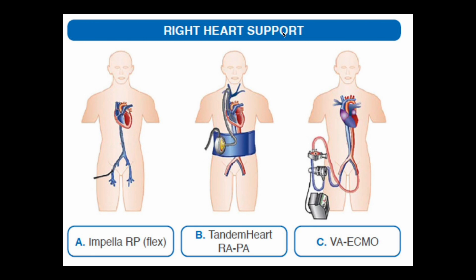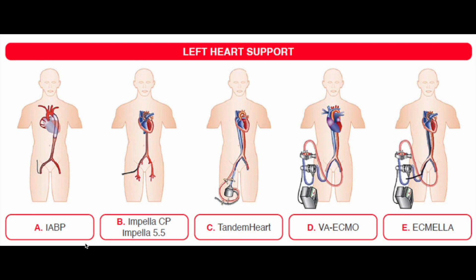For right heart support, available devices include the Impella RP, the Tandem Heart RVAD, and VA-ECMO. For left heart support, devices include the IABP, Impella (which unloads the left ventricle), the Tandem Heart, VA-ECMO, and the combination of Impella with ECMO, known as ECMELLA.